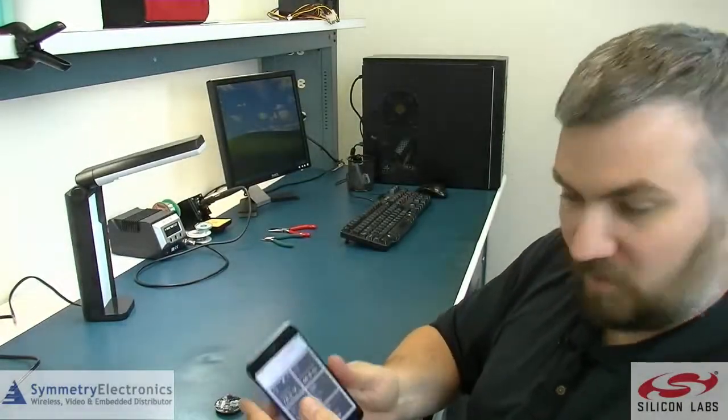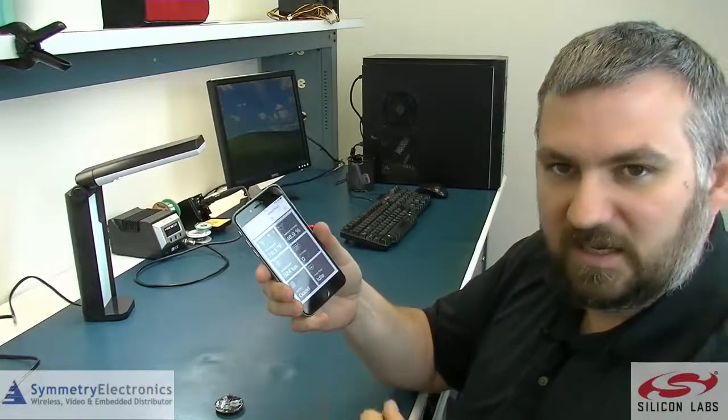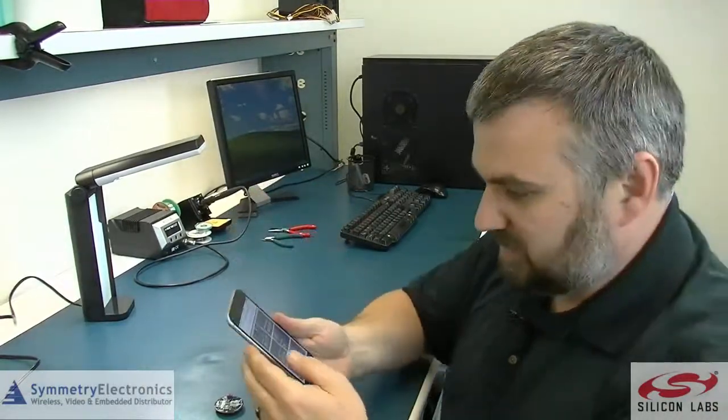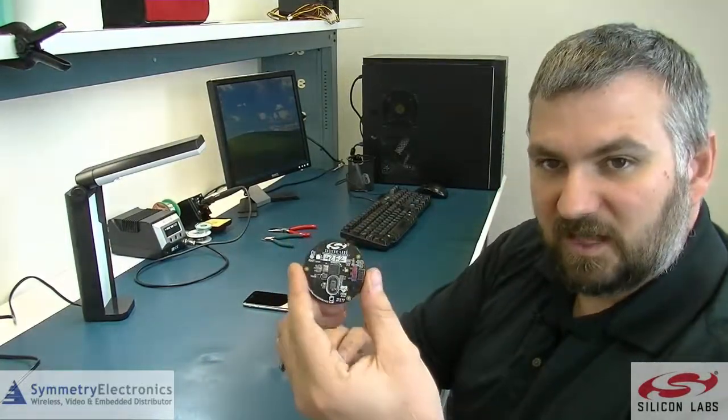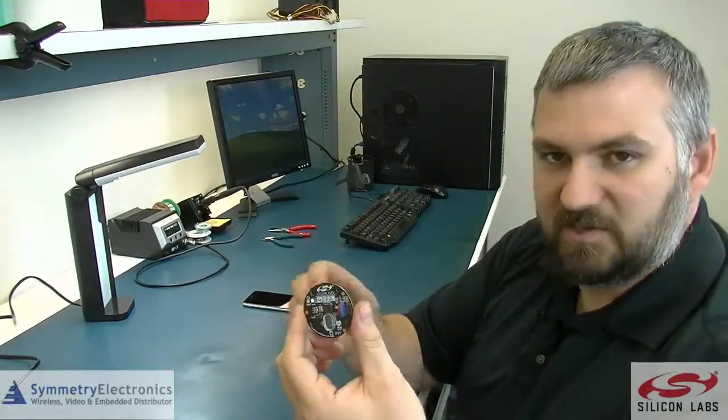So it's a really neat little board. It's easy to get up. You download this app, turn the board on and it connects via BLE. Super simple to use. Very powerful. It just shows you the suite of Silicon Labs products that you can get in a small board to get you up and running quickly.